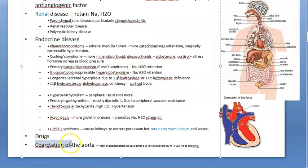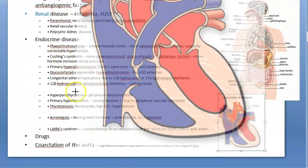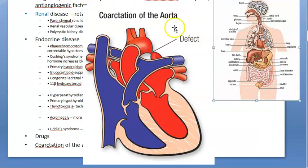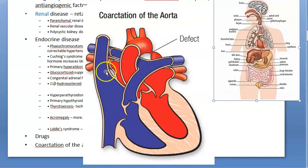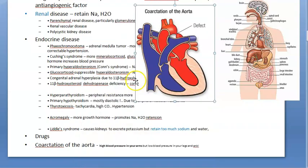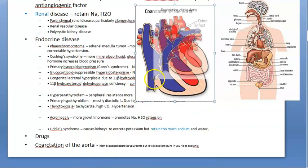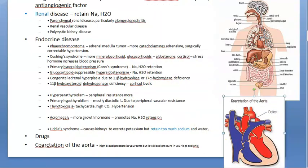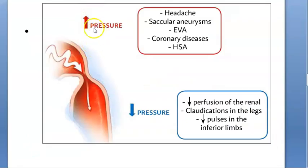The last cause is coarctation of the aorta. The aorta has a defect — it is squeezed like a rubber band is placed around it. When the heart pumps blood and the aorta has that constriction, there will be more pressure in the head and upper body above the coarctation, and low pressure below it.